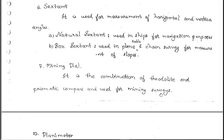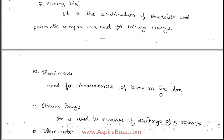The mining dial is a combination of theodolite and prismatic compass, and is used for mining surveys. The planimeter is used for measurement of areas on a plan.